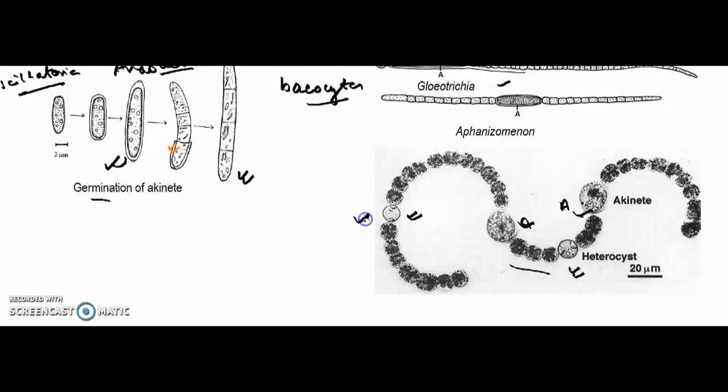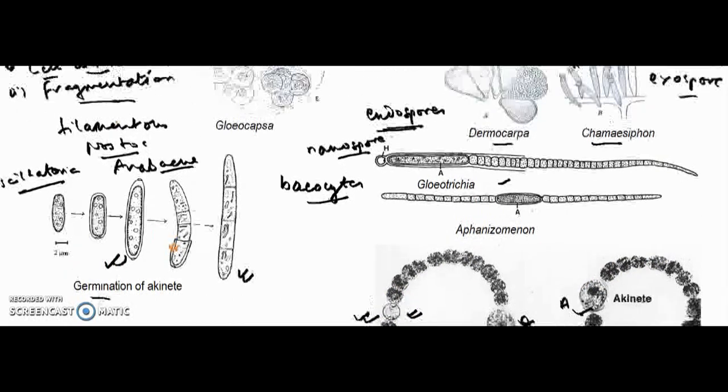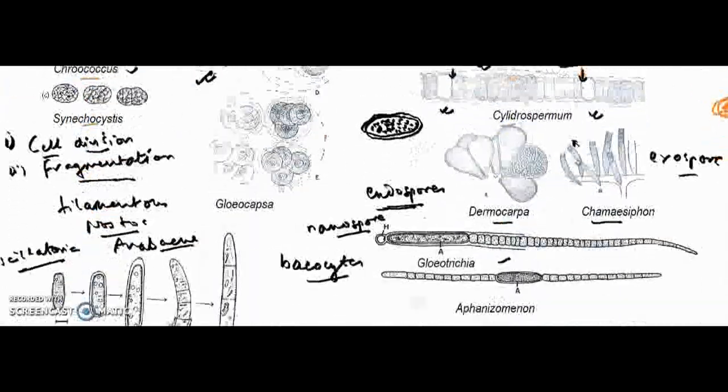Some authors have claimed that heterocysts, though nitrogen-fixing structures, in certain cases act as reproductive units or spores. These are the methods of asexual reproduction. Now let us talk about sexual reproduction.